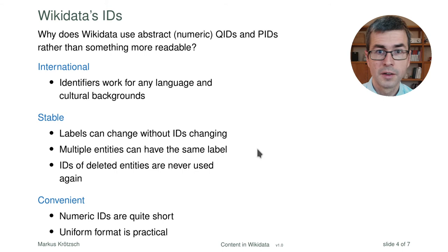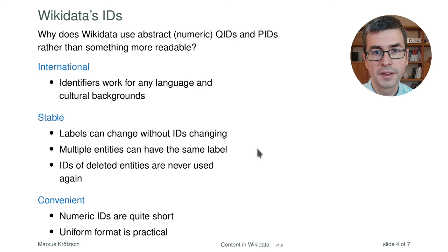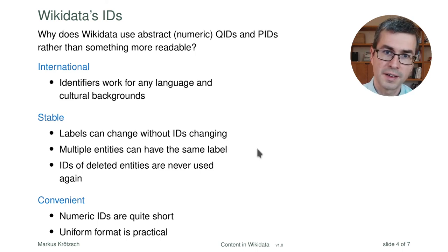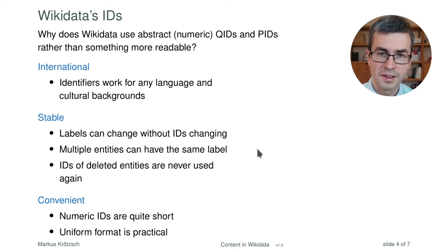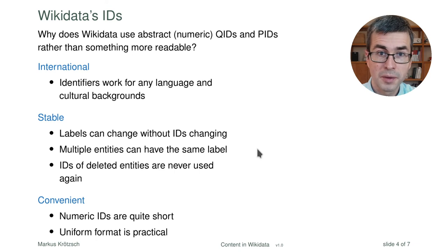For example, books have ISBN numbers as their identifiers — also numbers. Nobody would pick the title of a book as a more convenient way to refer to books. So hopefully you are convinced that this is overall a good idea, making our life much easier than having to work with identifiers in some completely different writing system. Still, there's the obvious question of how to find the right identifier in practice.